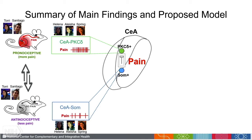Together, we're showing that the activity of these two neuronal populations is what drives the dual function of the central amygdala. In the last few moments, I want to show you where we're heading as a follow-up of these exciting findings.